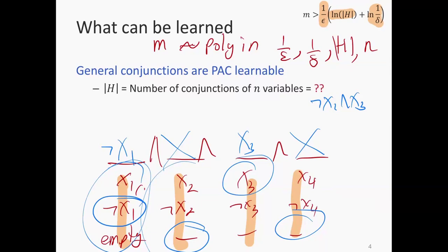A student asked: couldn't it also be one of those? The counting argument is slightly different — this is a different style of argument.